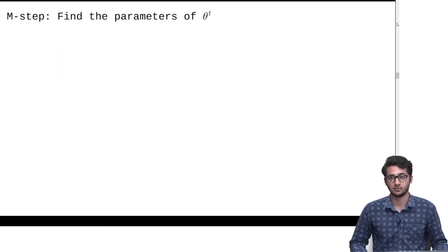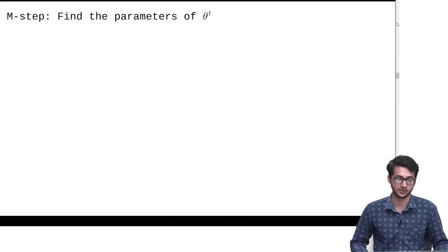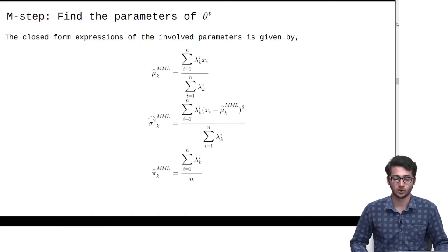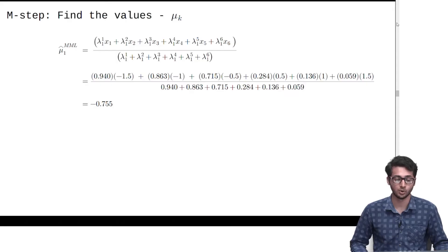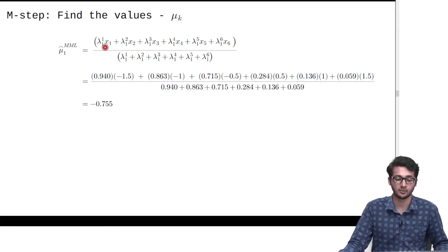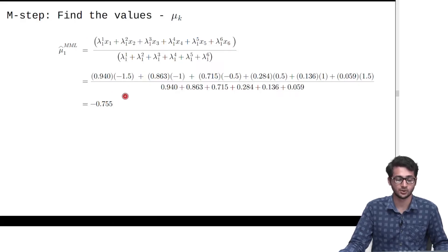Now that we have the values of lambda, our next step is the maximization step where we find new values of the parameters. The closed form expressions for mu, sigma squared, and pi are as shown. For mu_1, we take the lambda values corresponding to the first distribution, and on substitution we get the value of mu_1.